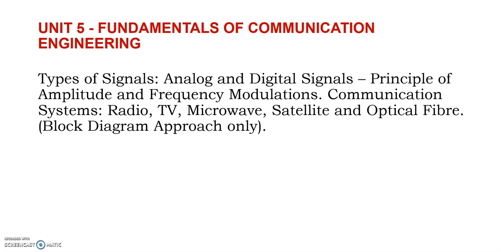In unit 5, we look at applications in communication engineering — radio, TV, microwave, satellite, and fiber optics are all communication-based applications. For transmission of communication signals, we study amplitude modulation and frequency modulation. In amplitude modulation, the amplitude of the carrier signal is changed with respect to the message signal. In frequency modulation, the frequency of the carrier is changed with respect to the message signal. Modulation enables long-distance transmission — for example, watching a live World Cup match from England in your home is possible because of modulation.